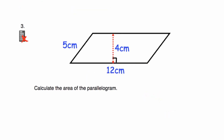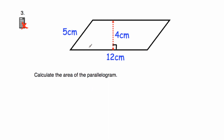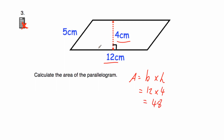Question number three. We've been given a parallelogram with a base of 12 centimeters, a height of four centimeters, and the length of the slanted side is five centimeters. We've been asked to calculate the area. We need the base and the height, so we just do base times height — we don't need the five centimeters. That five centimeters would be useful for finding the perimeter, but for area we do 12 times four, which equals 48 centimeters squared. We can simply ignore the slant length.